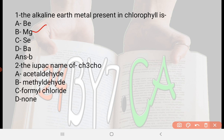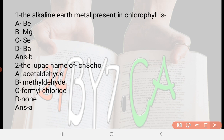Next: The IUPAC name of CH3CHO — option A: acetaldehyde, option B: methyl dehyde, option C: formyl chloride, option D: none. The right answer is option A, acetaldehyde. The IUPAC name of CH3CHO is acetaldehyde.